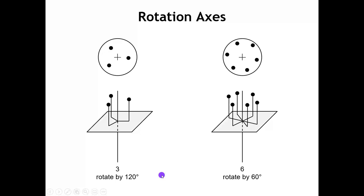The three-fold rotation axis and the six-fold rotation axis are shown here. The three-fold axis is a rotation by 120 degrees about the rotation axis, and the six-fold axis is a rotation by 360 divided by 6, or 60 degrees. These should be pretty easy to visualize.